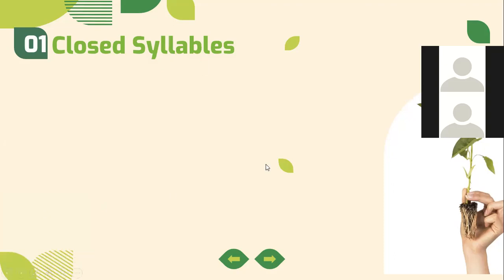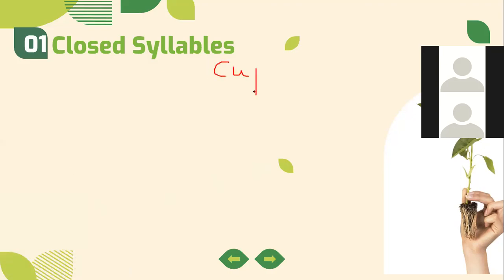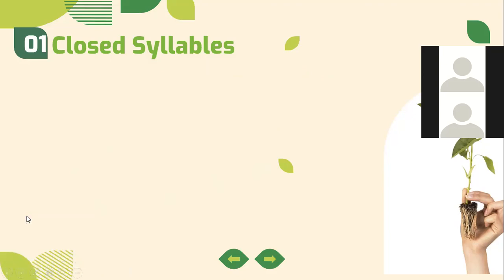So what do I mean by syllables? I mean the parts of the word that give me sounds. Every part in a word that gives me a sound I call a syllable. What gives us sounds in words are the vowel letters, so every syllable must have a vowel letter. Some words are made of one syllable — like 'cup' (one sound, one part) or 'cape' (one syllable with a long sound).